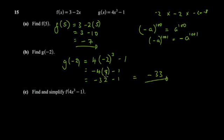If you're not good at directed numbers, use the same signs rule: take the repeating sign, then simply add. Take the negative sign, say 32 plus 1, and you get 33 — so the answer is negative 33.